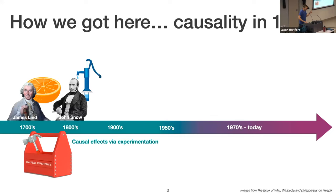For the last 300 years — the first 250 years of causal inference history — the main tool was experimentation. James Lind in the 1700s showed that citrus prevented scurvy in sailors by running an experiment. John Snow, sometimes regarded as the founder of modern epidemiology, showed that cholera was caused by dirty water by removing a pump handle in Broad Street, Soho — you can still see that pump today.